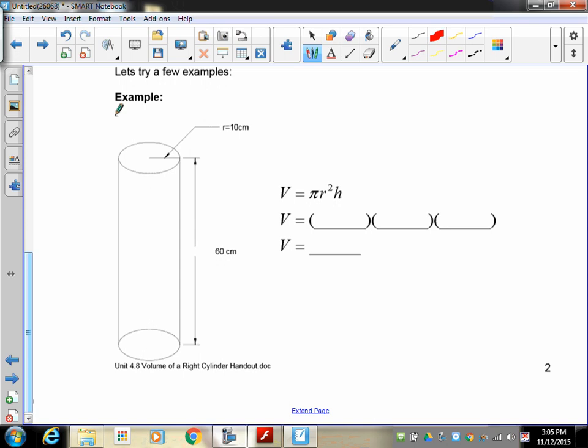So I've got a cylinder here which has a radius of 10 centimeters. I've got a height of 60 centimeters, and I want to know what its volume is. So we have three variables. So start with the first one. Pi is always 3.14.